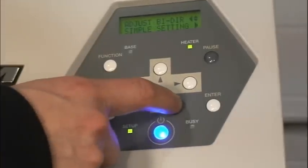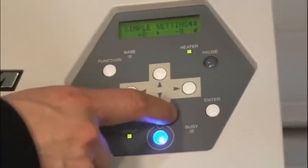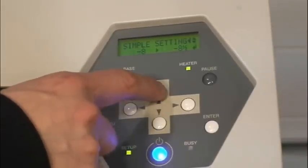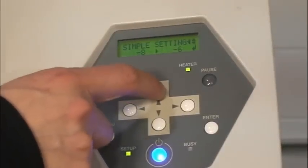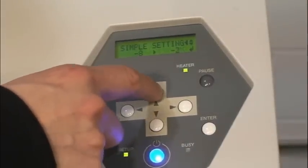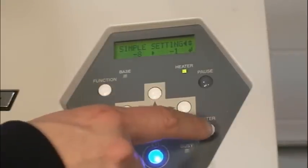For this particular machine, we require a setting of minus one. To do this, press the down key and then the right arrow key. Use the up and down arrow keys to select the desired setting. Press enter to save the settings.